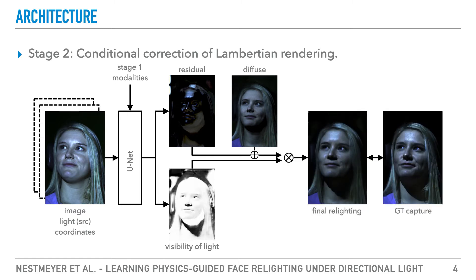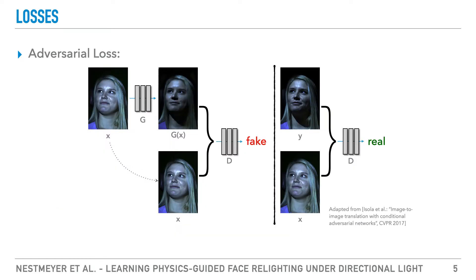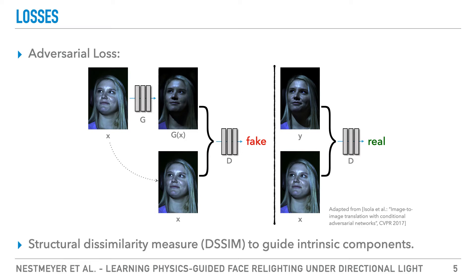Back-to-back execution of both stages results in a fully differentiable end-to-end architecture. The final relight result is guided by an adversarial loss similar to PIX2PIX. Each intrinsic prediction is guided by an individual loss for which we chose the structured dissimilarity measure after thorough evaluation.